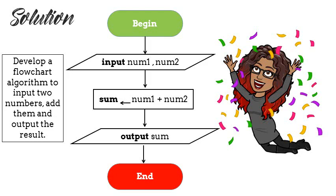Next, we get the output and the output would be sum. And again, we use another terminator to show that we have ended our algorithm.